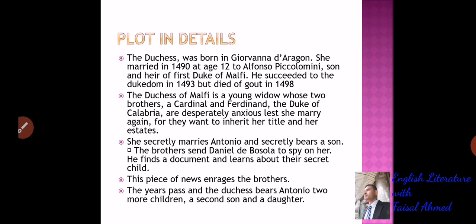Now we will go to the plot analysis. The Duchess was born in Giovanna di Aragón, a place in Italy. She married in 1490 at age 12 to Alfonso Piccolomini — the first husband of the Duchess. She had a son and heir, the first Duke of Malfi. He succeeded to the Dukedom in 1493 but died of gout — a kind of disease — in 1498. So the Duchess's first husband died in 1498, leaving her a young widow.